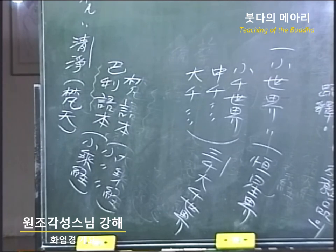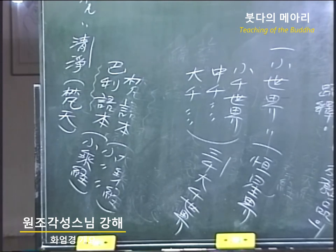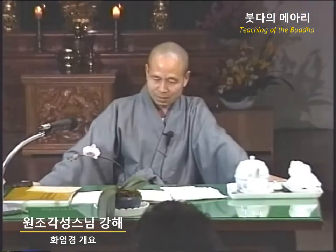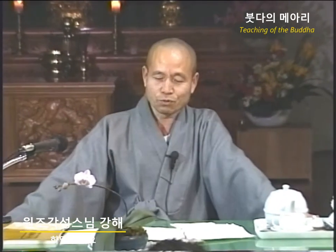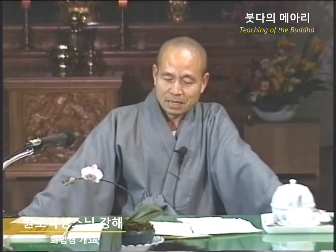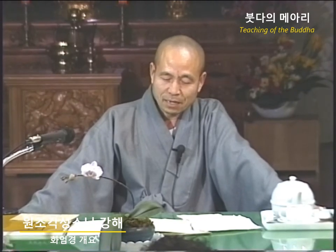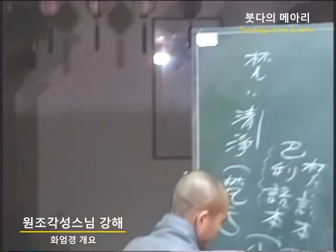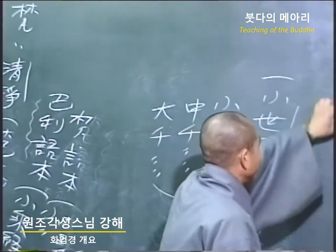즉 삼천대천세계가 10개라는 말입니다. 13이 아니라 10과 삼천대천세계로 봐야 합니다. 삼천대천세계가 10배가 되면 그 삼천대천세계의 먼지가 얼마나 많겠어요. 또 삼천대천세계를 다 부수면 그 밀가루 같은 먼지가 얼마나 많겠습니까. 그렇게 많은 게송이 있고, 상본의 품은 1사천하 미진수 품이라고 합니다.